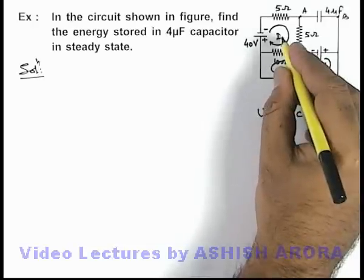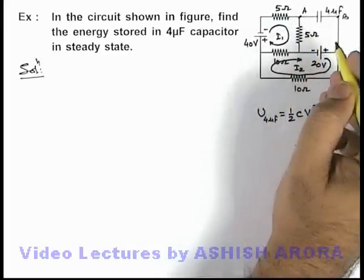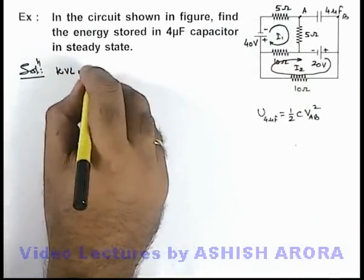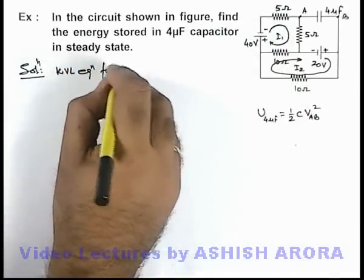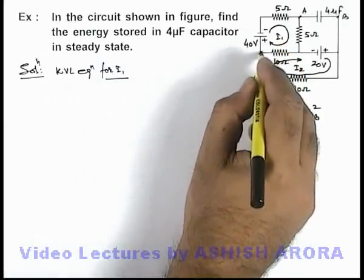If we calculate the value of current i1, we are easily able to calculate the potential difference across a and b. So we write the first KVL equation. For i1, if we write down the equation, we start from this point.